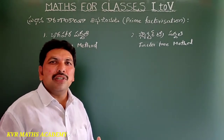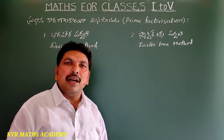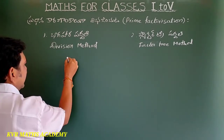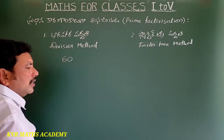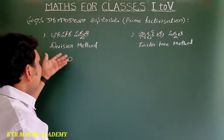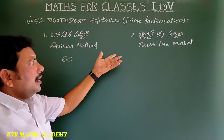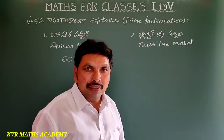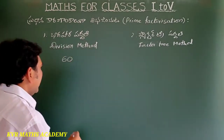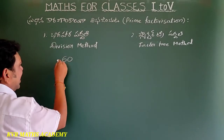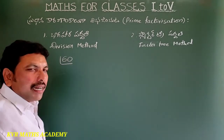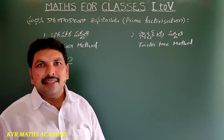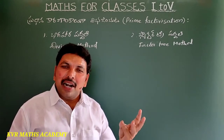Let me show you one example. First, the number is 60. We can do this using the factor tree method. How do we know the factors? We already know the factors.